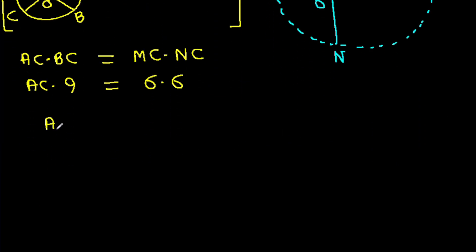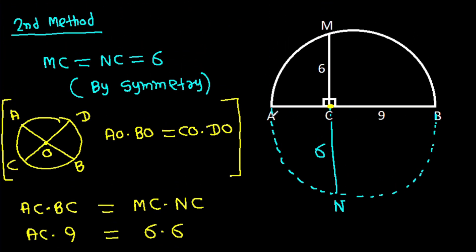And AC times 9 is 36. So AC will be 36 over 9, that will be 4. So AC is 4.